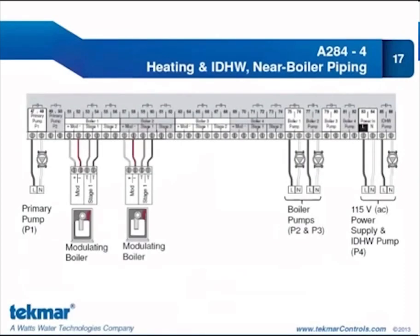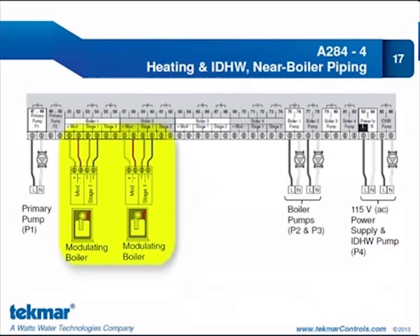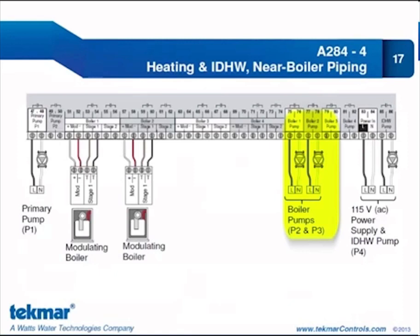Looking at the bottom half of the control for application 4, starting on the left-hand side, we have only one primary pump connection since we are not doing standby operation. Our two modulating boilers both need a modulating signal and a power enable provided by the stage 1 contact closure. Each modulating boiler has a boiler pump switched through a dry contact. We also have our indirect domestic hot water pump and power into the control.